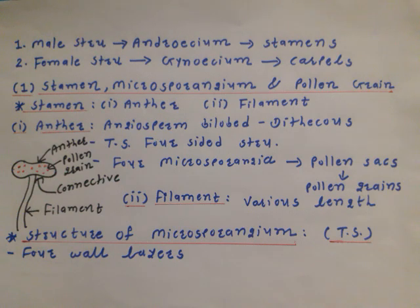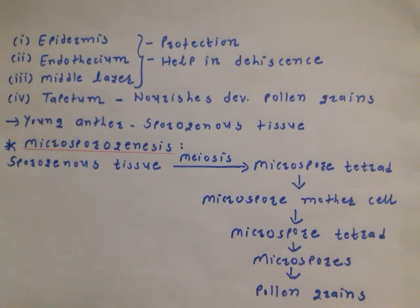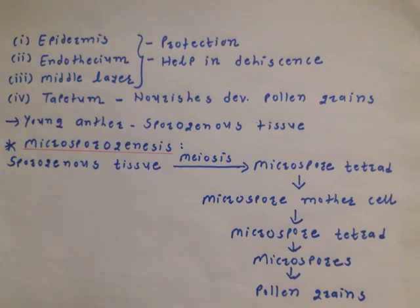Now, the structure of microsporangium. We can study it in detail by taking a transverse section (T.S.) of the microsporangium. It shows four wall layers: epidermis, endothecium, middle layer, and tapetum. The first three layers are protective and helpful in the dehiscence process for liberation or release of pollen grains at maturity. The fourth layer, tapetum, is required for nourishment of developing pollen grains.